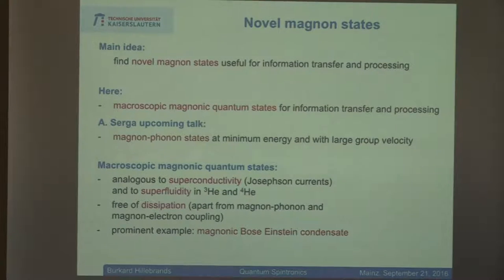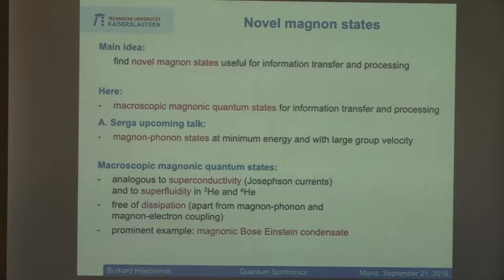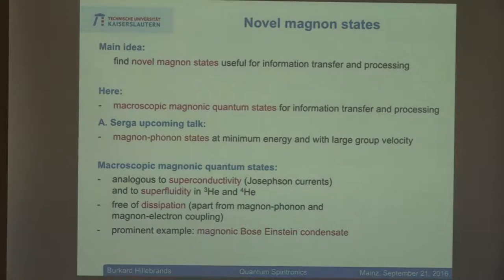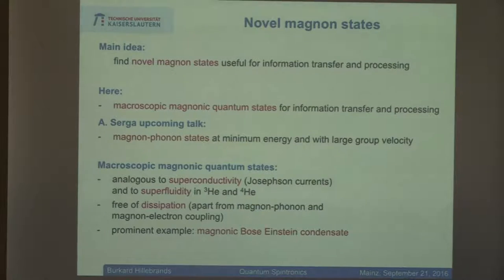Our macroscopic magnonic quantum states can be thought as being analogous to superconductivity and to superfluidity, so we can go to these fields and find what ideas we can transfer to our field. They are free of dissipation — but you have to put a bracket behind that: free of dissipation apart from the residual coupling to the phonon bath. In the development of the field, this was always a big obstacle, because people were saying: why are you talking about supercurrents in your system if the supercurrents only live for a finite lifetime? Isn't a supercurrent supposed to persist forever? That is a valid argument, but the counterargument is that we can separate all dissipation channels to the phononic system, because we can describe all these processes with a unique damping parameter alpha which has no wave vector and no frequency dependence for the magnons we are discussing. So we can really separate it away.